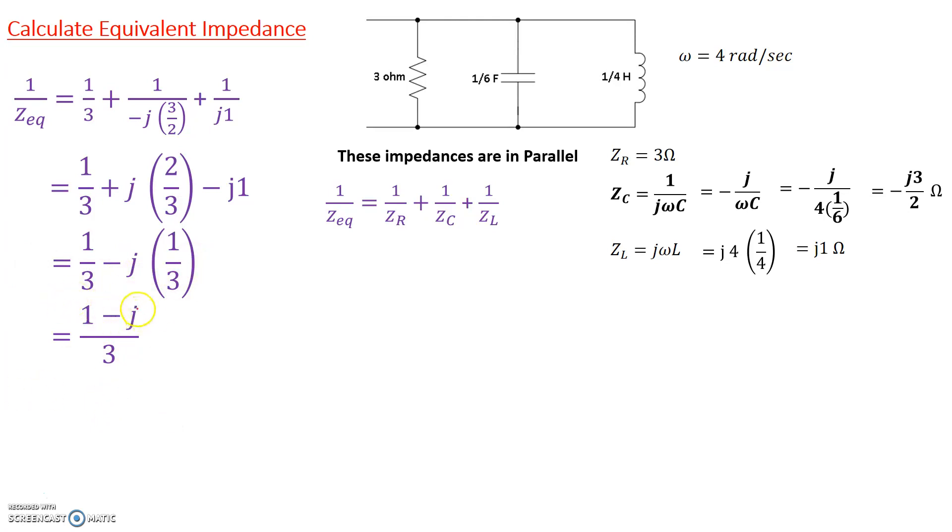In phasor domain, 1 minus j can be written as square root of 2 at angle minus 45 degrees, and 3 is 3 angle 0 degrees. When dividing phasors, the magnitudes divide, so we get square root of 2 divided by 3. The angle of the top subtracts the angle of the bottom, so 1 over Z_equivalent equals square root of 2 divided by 3, angle minus 45 degrees.